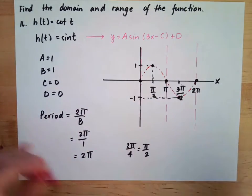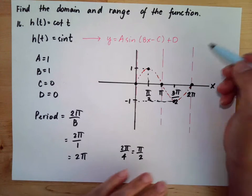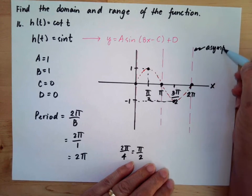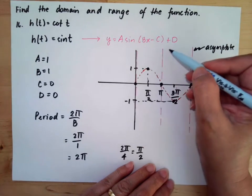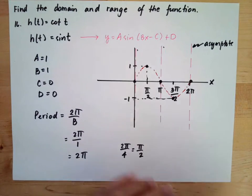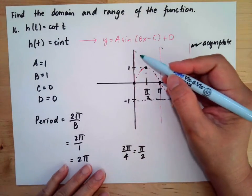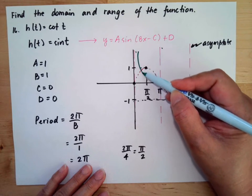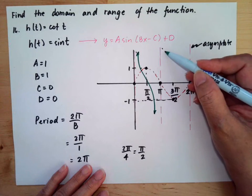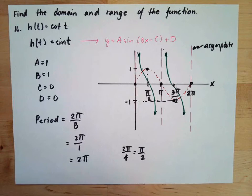These are our asymptotes — at 0, π, and 2π. The cotangent function cannot cross these lines. For a positive cotangent, the graph goes from high on the left down to the right within each interval between asymptotes. This gives us the graph of cotangent t.